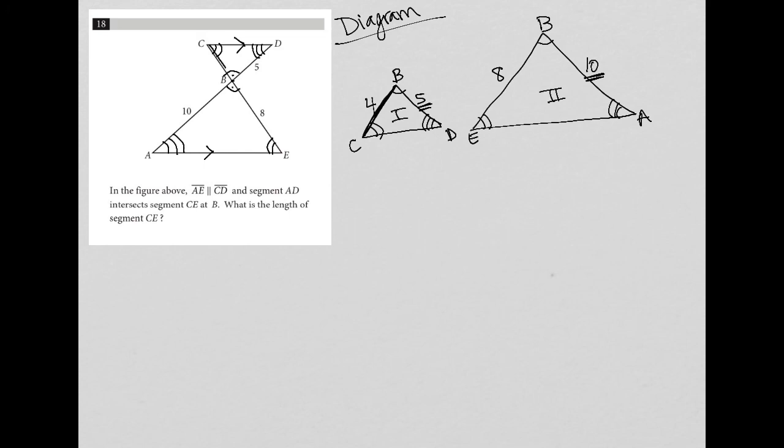Well, CE is made up of CB plus BE. CB is 4, BE is 8. Therefore, the distance from C to E is equal to 12. And that is our final answer.